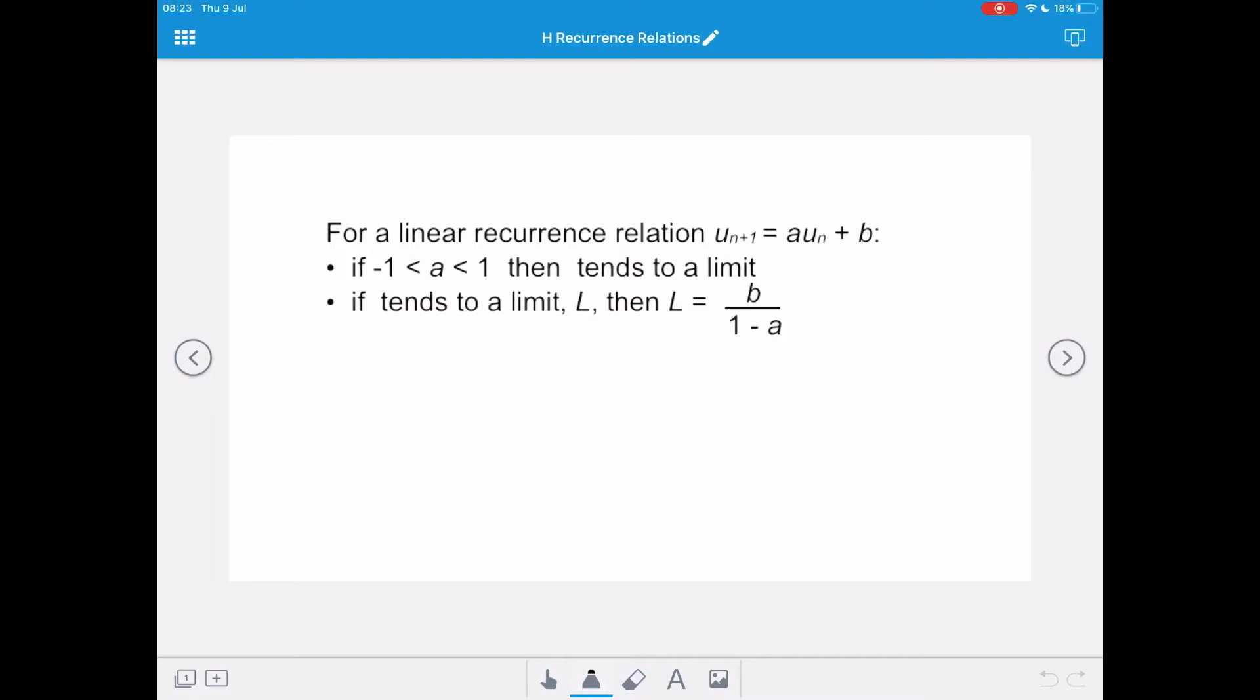So in summary, for a linear recurrence relation un+1 equals aun plus b, if a is between negative 1 and 1, then the recurrence relation tends to a limit. And if the recurrence relation tends to a limit L, then L equals b over 1 minus a.